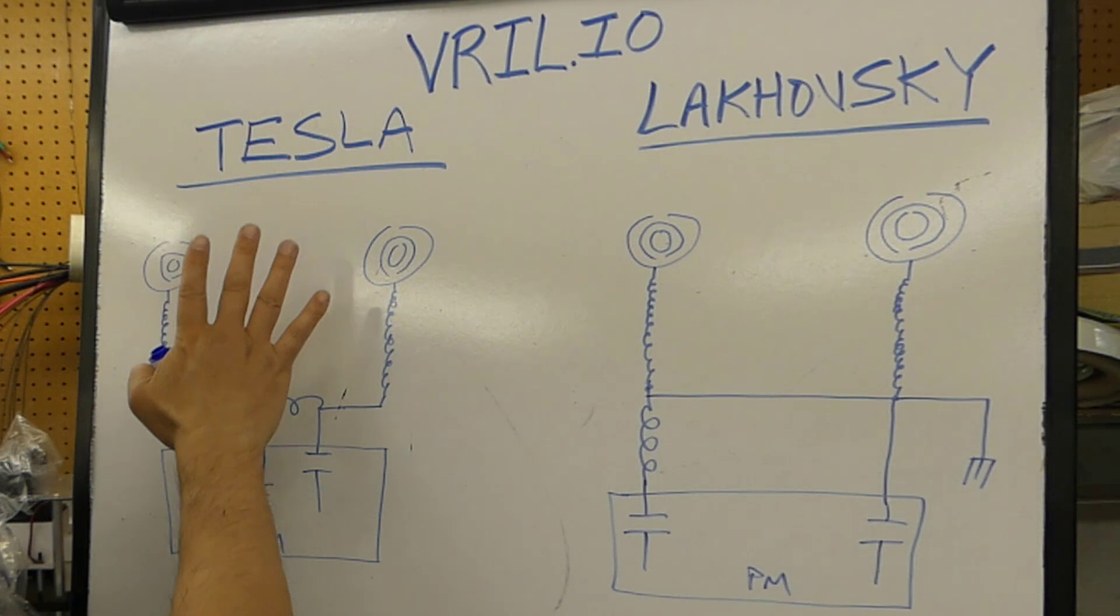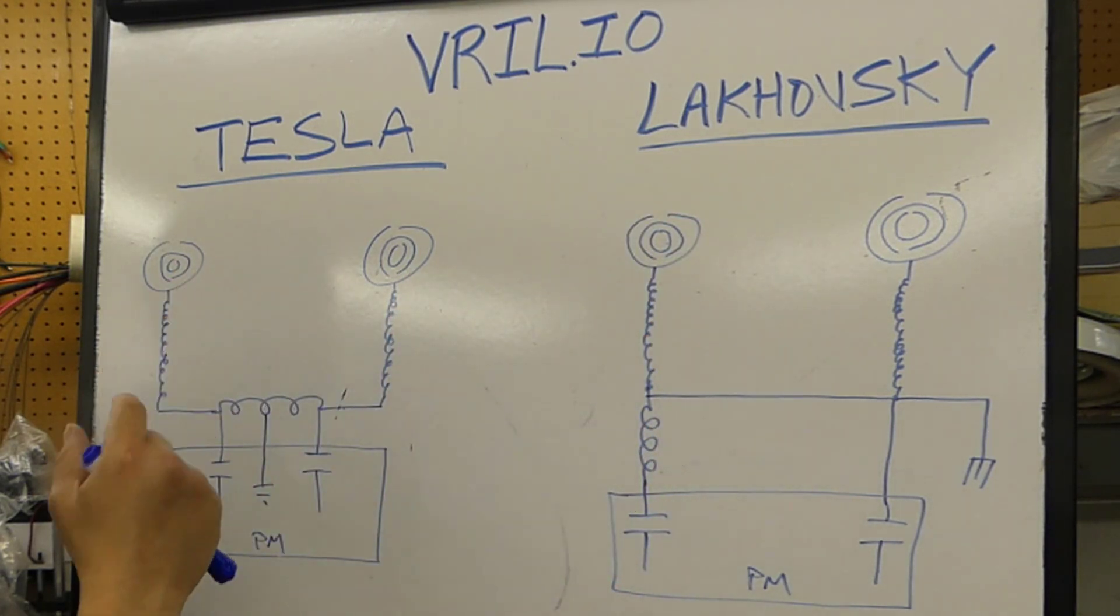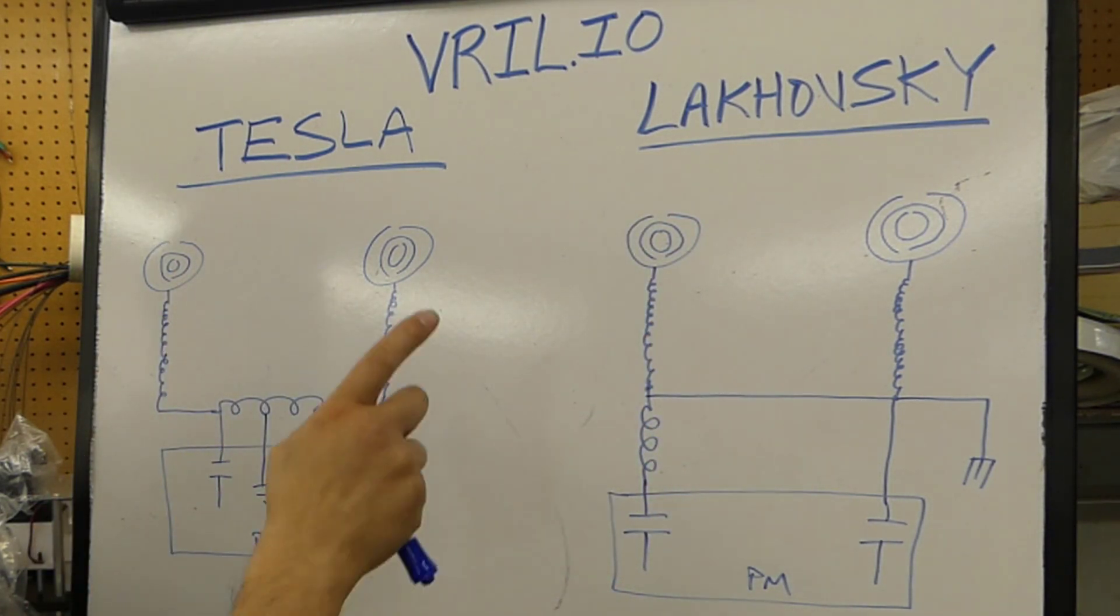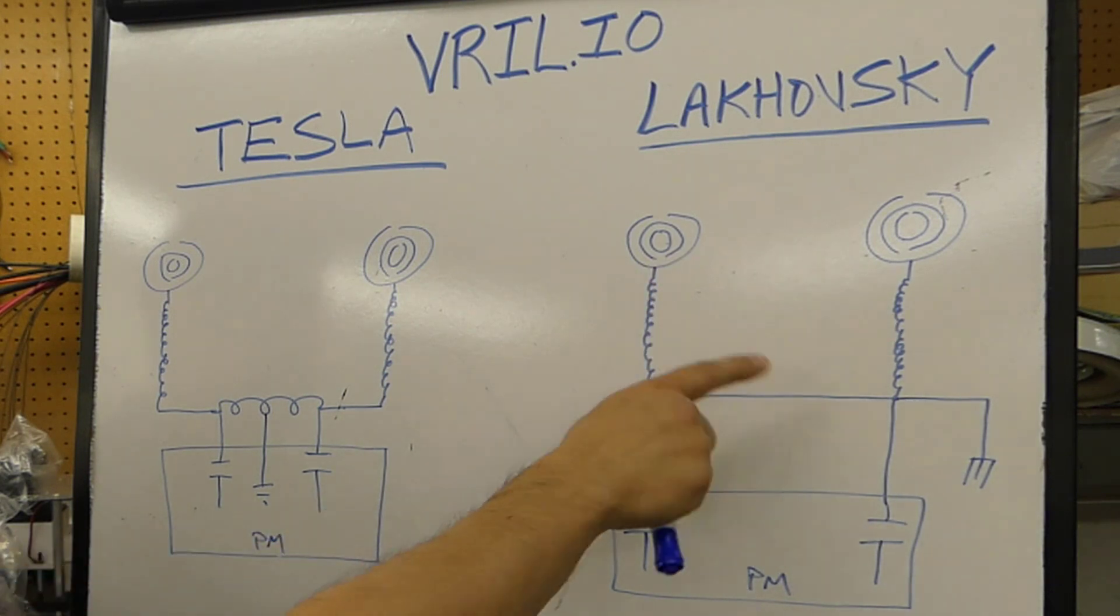Whether it's the Tesla or the Lakhovsky method, you can use the same Pulse Modulator for both. You just have to change the coil arrangement and how it's wired up.